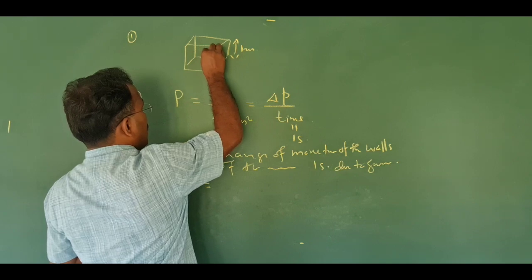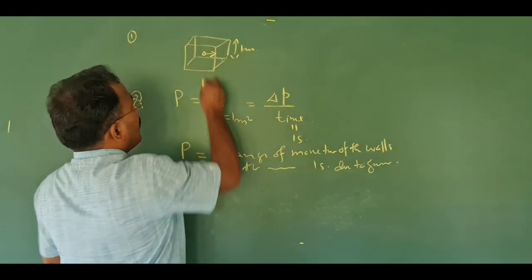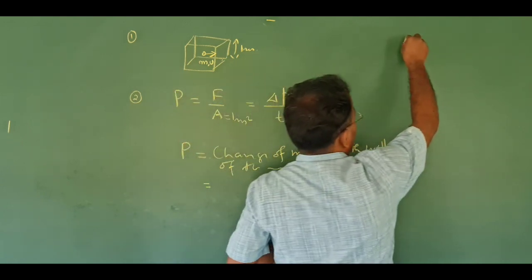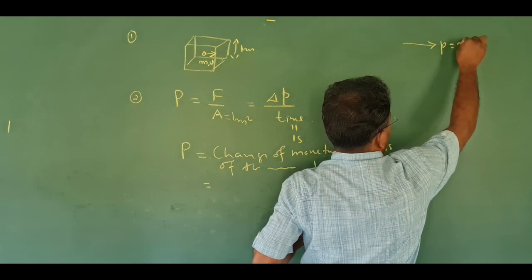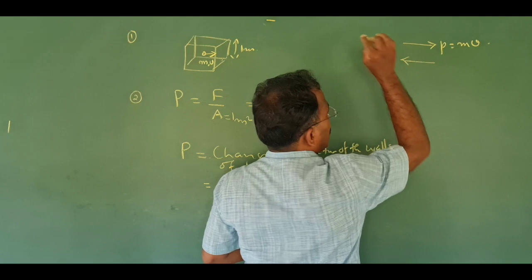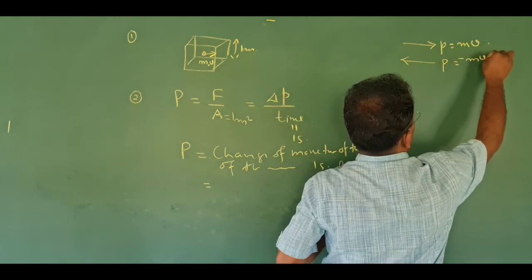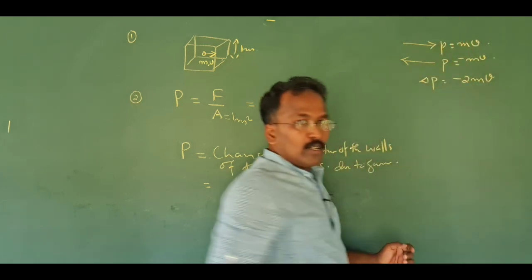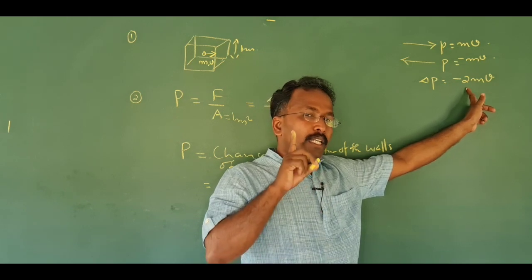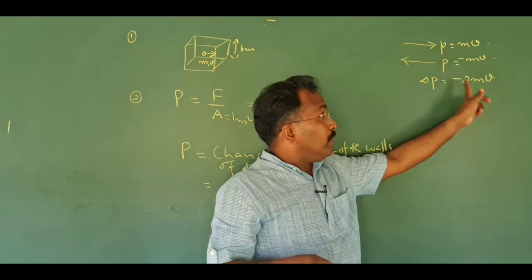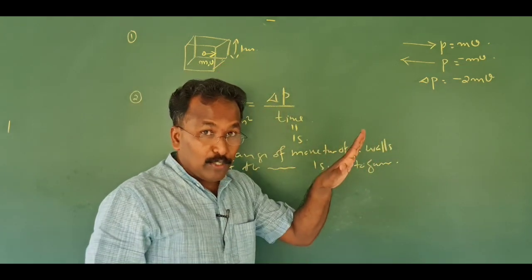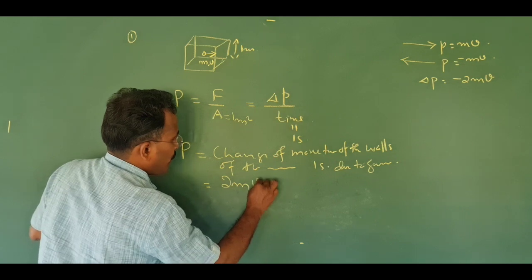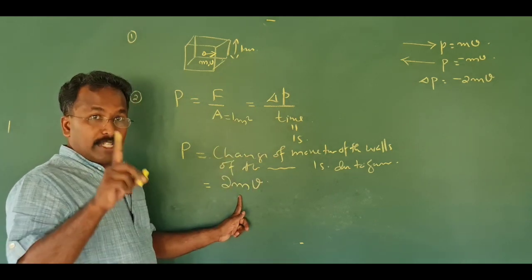If you have a gas molecule going to the top of the container, that gas molecule's change of momentum is equal to 2 × m × v. This is the change of momentum for one molecule.